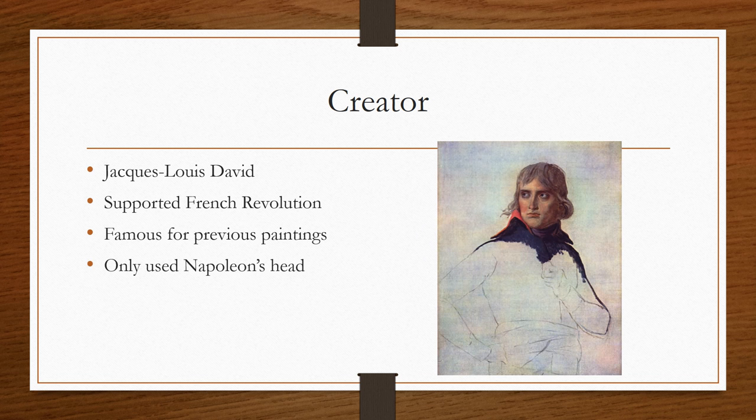One thing I thought was interesting is that David used Napoleon's head in the sketch, but the rest of his body is not Napoleon's. Napoleon actually had his son pose for the rest of his body. I guess it gave it more of a youthful look and made him appear a little bit more fit.